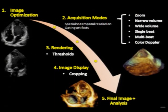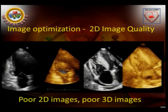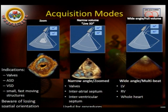These are the ways how 3D echocardiographic images are taken. Image optimization involves acquisition modes — zoom, narrow volume, and wide volume — with single-beat or multi-beat acquisition. The image display sometimes requires cropping for final image and analysis. One important point is that image optimization requires a good quality two-dimensional image; poor two-dimensional images lead to poor 3D images.